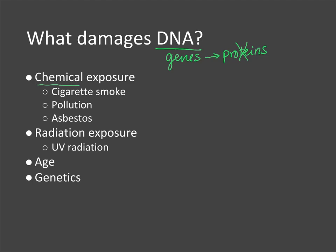Asbestos was used to make building materials fire resistant, but people who inhaled it developed a specific type of lung cancer caused by that chemical. Radiation exposure can also lead to cancer — too much UV radiation can cause skin cancer, and radiation from nuclear power plant meltdowns, like Chernobyl and Fukushima after the tsunami, can release radiation that causes cancer.